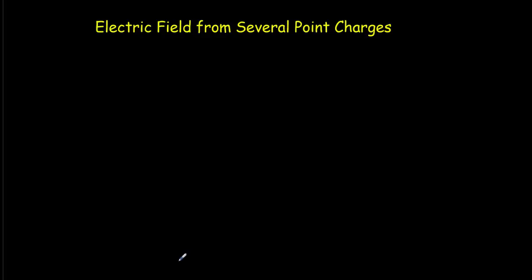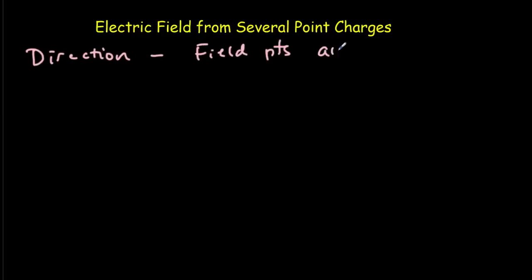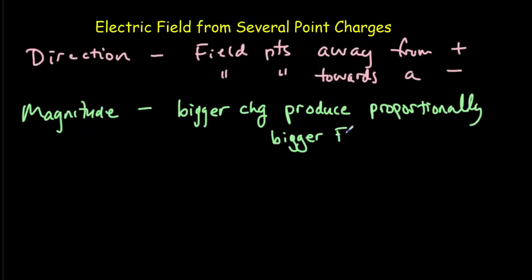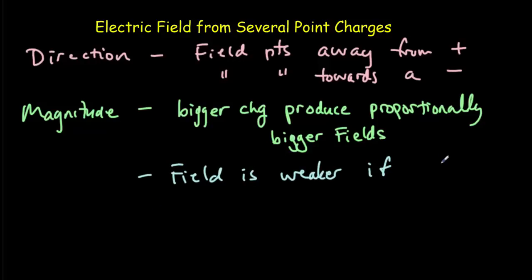In IB questions you're often asked to qualitatively compare electric fields from several point charges. First, consider direction: the field always points away from a positive charge and towards a negative charge. Second, consider magnitude. Bigger charges produce proportionally bigger fields. But you also have to consider distance, because in Coulomb's law the distance gets squared — that distance factor is more important than the charge factor. The field is weaker if farther from the charge, going as 1 over distance squared.